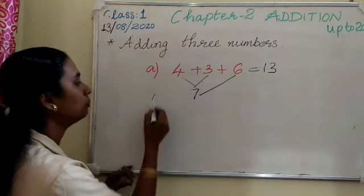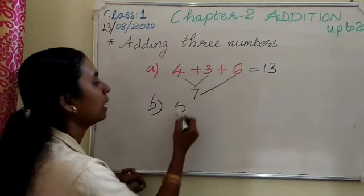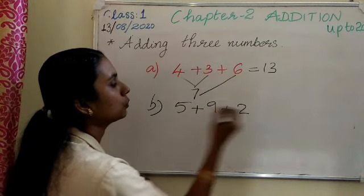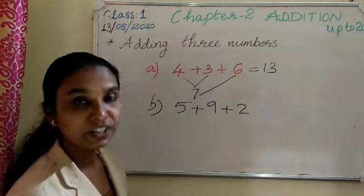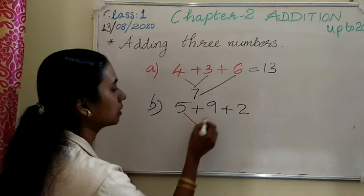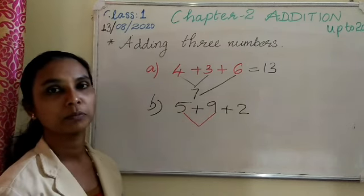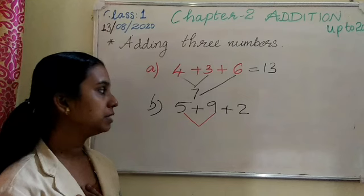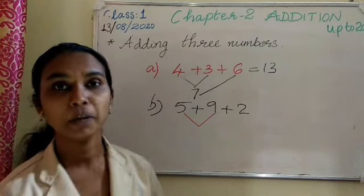One more. B, 5 plus 9 plus 2. The same way we add the first two numbers. 5 in your mind. Is it 5 in your mind? No.